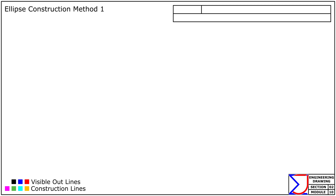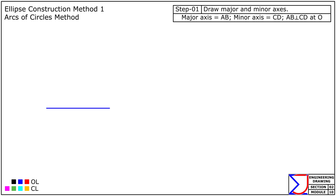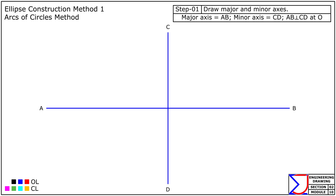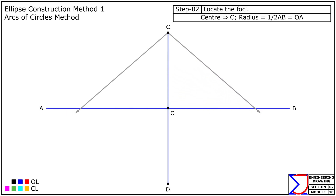Ellipse construction method one. Let's start with the arcs of circles method to construct the ellipse having a major axis of 150 millimeters and a minor axis of 90 millimeters. First, draw the major axis AB and the minor axis CD of the specified lengths. Ensure that they bisect each other at right angles at the center point O. Next, with C as the center and the radius equal to half the length of the major axis, cut arcs on the major axis.